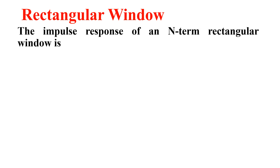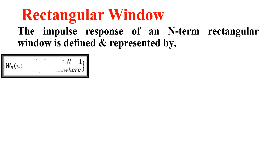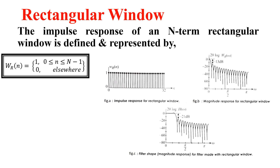What should be remembered and written to understand rectangular window? The impulse response of an N-term rectangular window is defined and represented by this formula. W_R(n) — R stands for rectangular — is equal to 1 for N varying from 0 to N minus 1, and it is 0 everywhere else. We must remember this, along with diagrams Figure A, B, and C. A represents the impulse response, B represents the magnitude response, and C represents the filter shape for a filter made with the rectangular window.